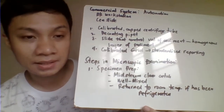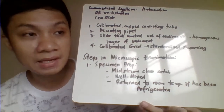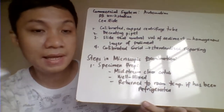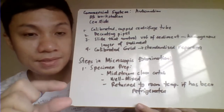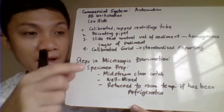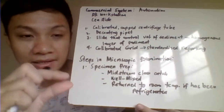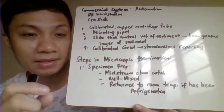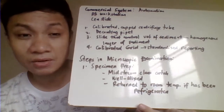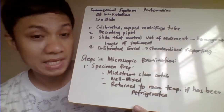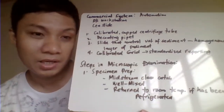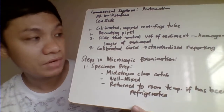Automated instruments also have a decanting pipette to regulate the volume of sediment remaining in the tube after decantation and centrifugation. They have calibrated decanting pipettes to ensure the exact volume remains, unlike the usual practice where manual decanting always relies on your skills and it's hard to standardize — sometimes the amount left varies. They also control the volume of sediment put on the slide, forming a homogeneous monolayer of sediment, and have a calibrated grid for reporting sediments identified under the microscope.